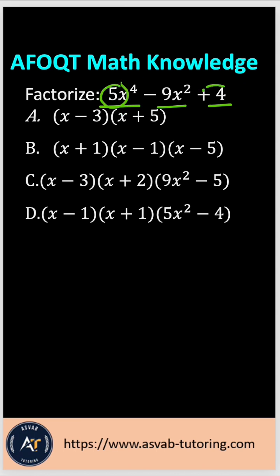You have to multiply this 4 with 5, so that gives you 4 times 5 is 20. Now you have to split this 20 in a way. If you add or subtract, gives you 9, and if you multiply, gives you 20.